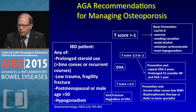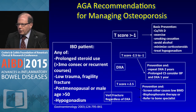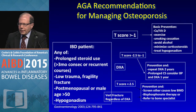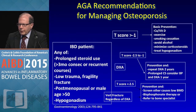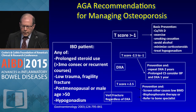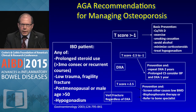Looking at the AGA recommendations, the key points are vitamin D, vitamin D, vitamin D, and smoking cessation. Minimizing corticosteroids is very important — we've done much better now with that. These are basic things we can do. Also get DEXA scans every two years.